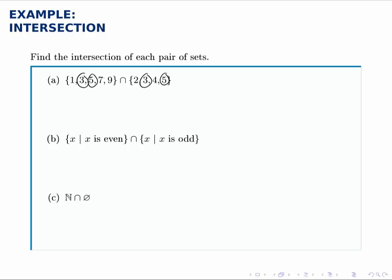But 1, 7, and 9 only appear in the first one and not the second one, and 2 and 4 appear only in the second one, not in the first one. So the intersection is going to be the set with two elements, 3 and 5, the two elements that appear in both sets simultaneously.